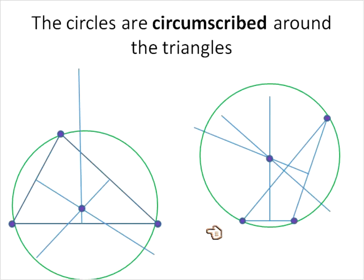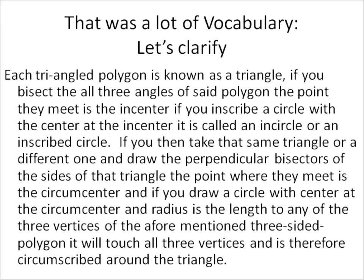So, now you've taken all of this information, what can you do with it? Well, let me tell you one thing you can do with it. You can make all sorts of friends because you can tell them this. Each triangle polygon is known as a triangle. If you bisect all three angles of said polygon, the point they meet is the incenter. If you inscribe a circle with the center at the incenter, it's called the incircle or an inscribed circle. If you then take the same triangle or a different one and draw the perpendicular bisectors of the sides of that triangle, the point where they meet is the circumcenter. If you draw the circle using the circumcenter as the center of the circle and the radius to any point vertice of the triangle, aforementioned three-sided polygon, it will touch all three vertices and is therefore circumscribed around the triangle.